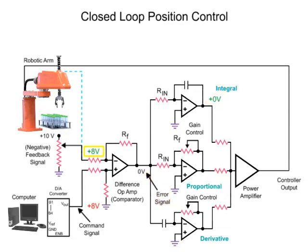The feedback signal is now equal to the command signal. Output voltages of the amplifiers are zero and the robotic arm motor stops turning.